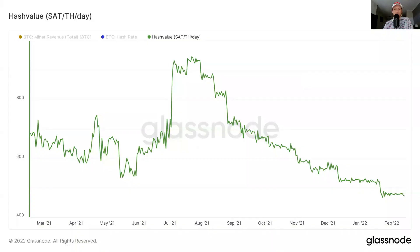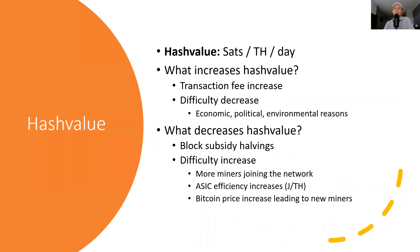So we're going to be talking about hash value today. This is the quick chart of what hash value has looked like over the last year, but what is hash value? Hash value is an important metric for miners to be monitoring. Basically, it tells you how many sats or how much Bitcoin you earn per terahash per day. Terahash is basically a measurement of how much hash rate a miner has deployed.